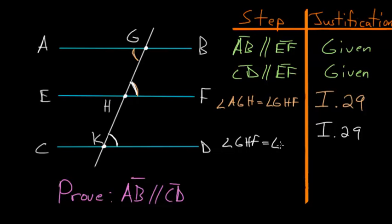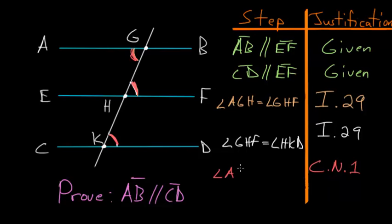By Common Notion 1 — things which are equal to the same thing are equal to each other — since angle AGH equals angle GHF, and angle GHF equals angle HKD, it follows that angle AGH must equal angle HKD.